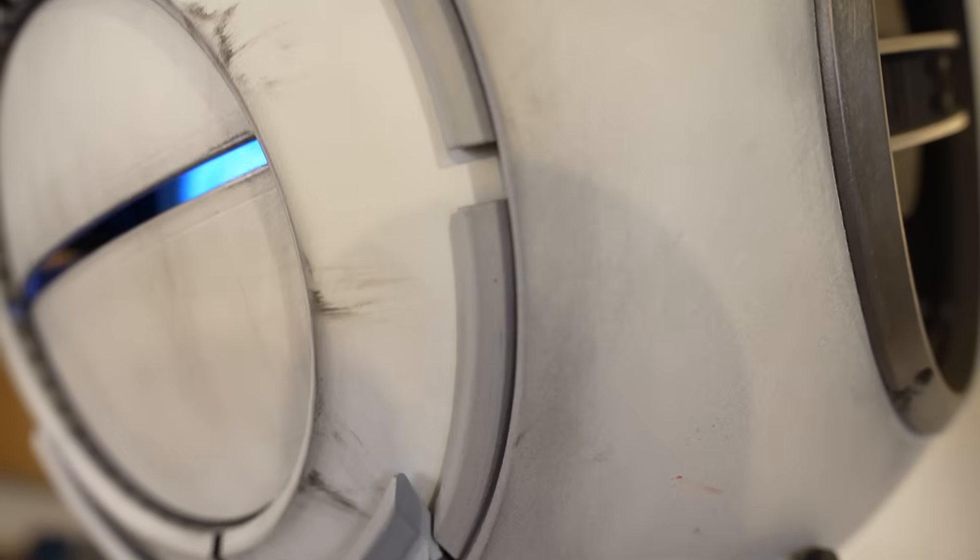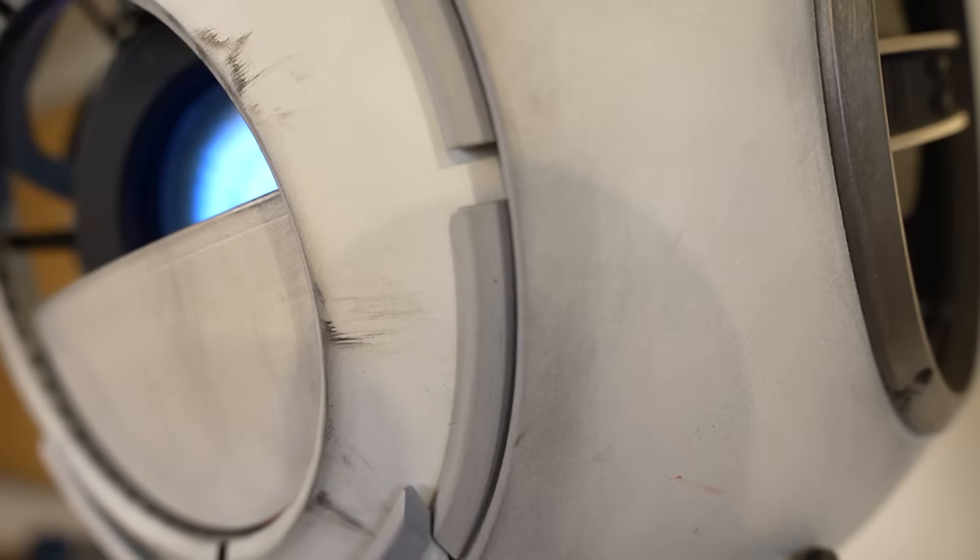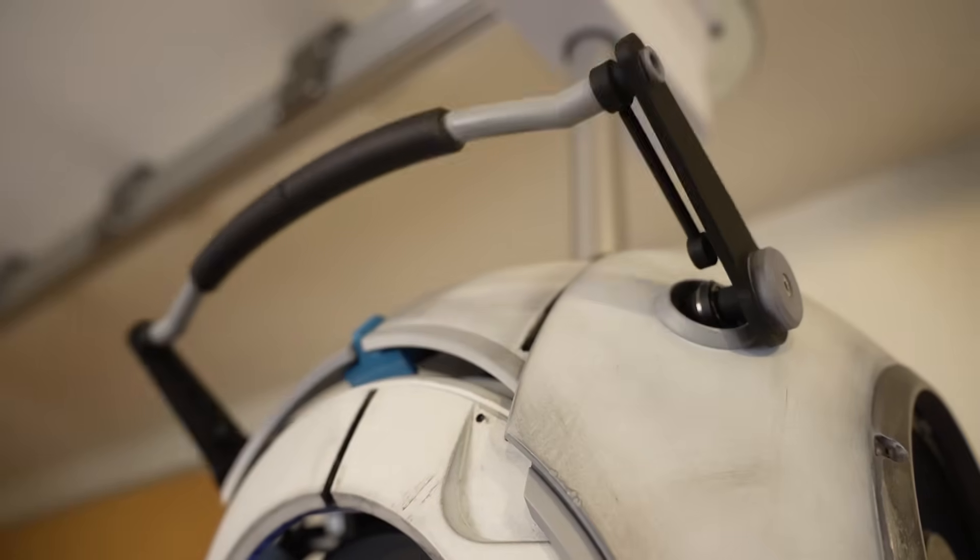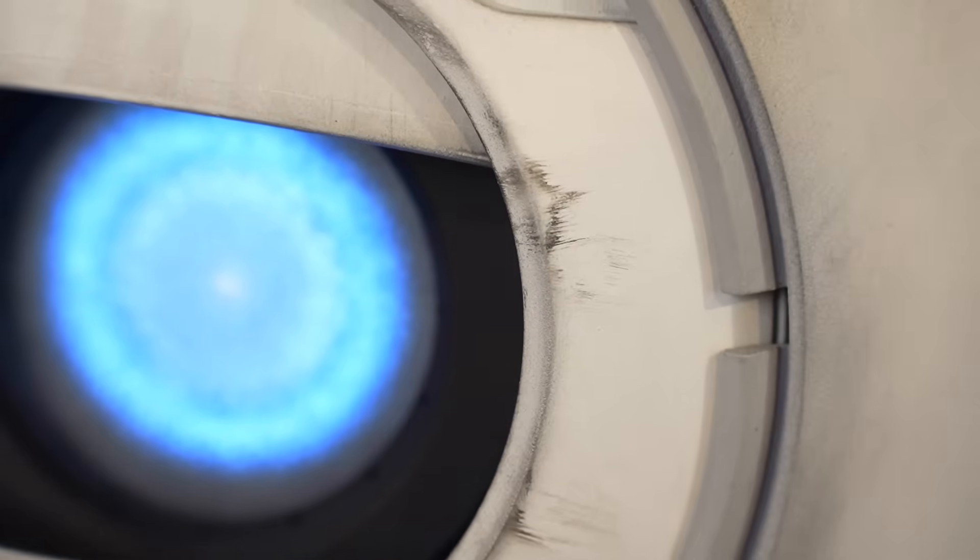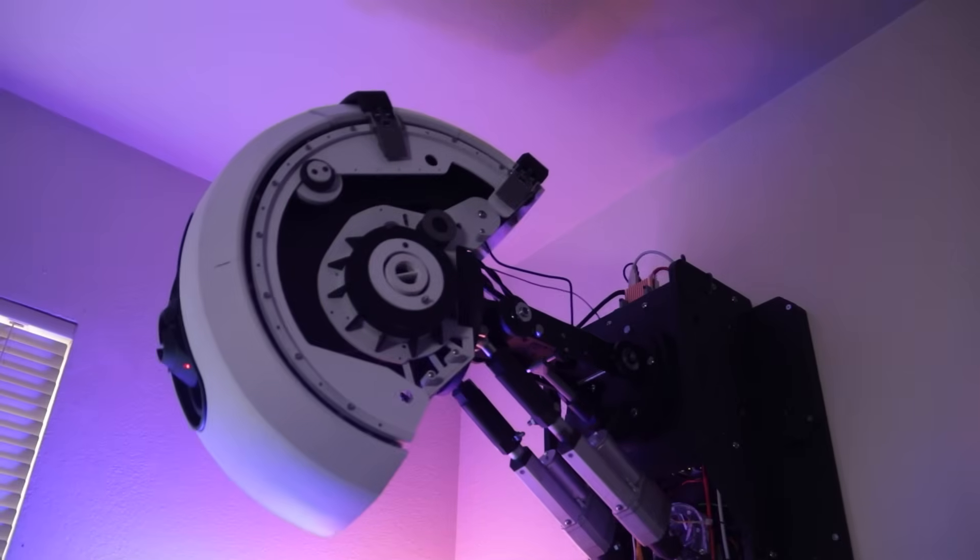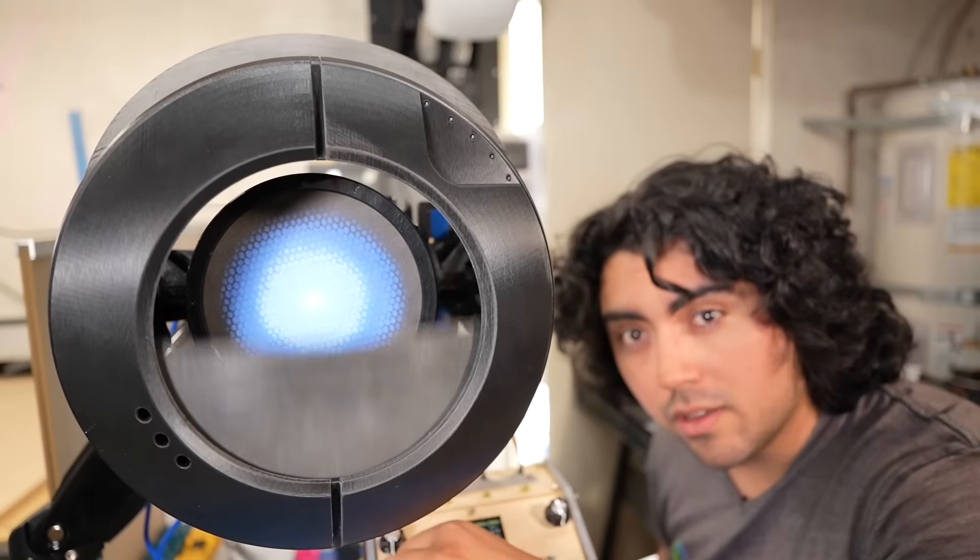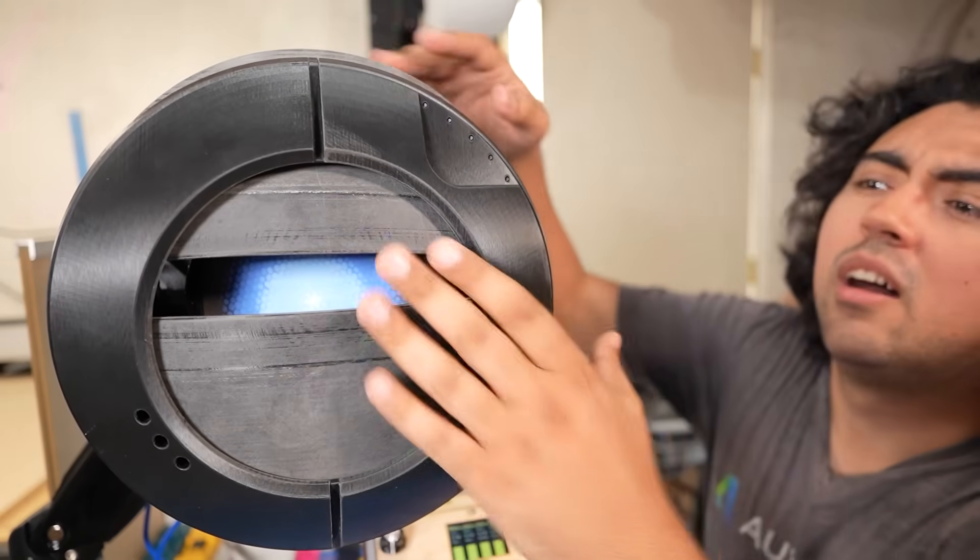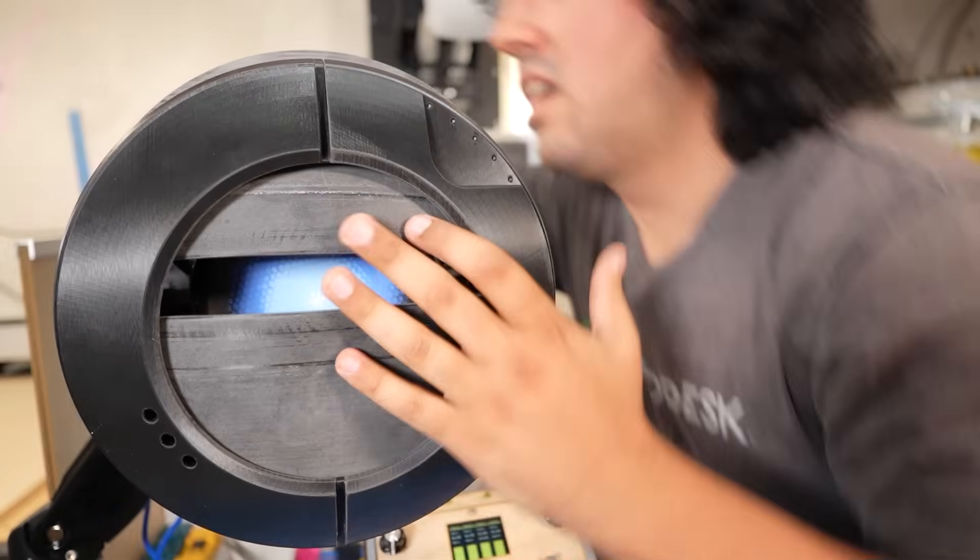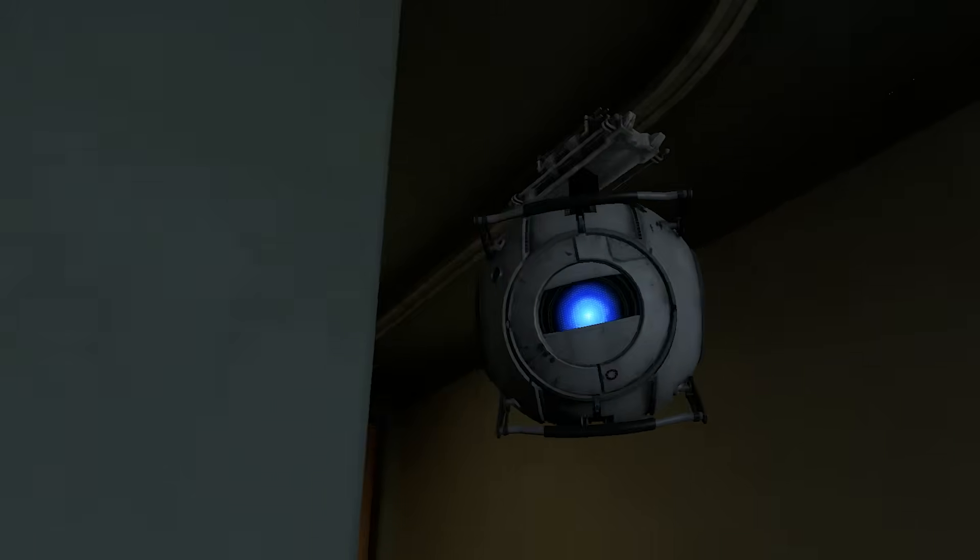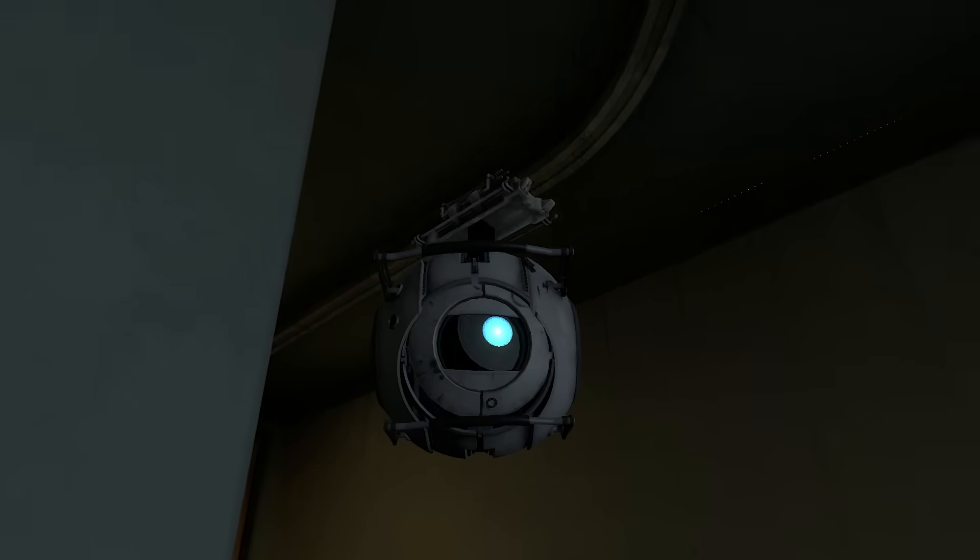This is my latest attempt at building an animatronic version of Wheatley from Portal 2. Why did I spend hundreds of hours and thousands of dollars developing a high-tech moron? Well, a few years ago, I built a basic animatronic version of GLaDOS's head as she appears in Portal 2. The next logical step was to build everyone's favorite intelligence dampening sphere. How hard could it be to build the robotic body of an advanced AI from a video game world where the laws of physics are merely a suggestion?